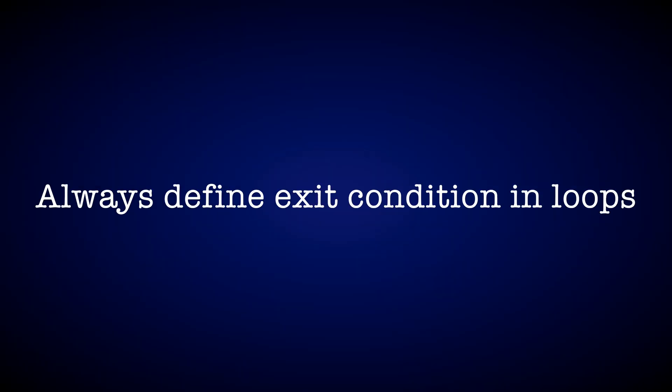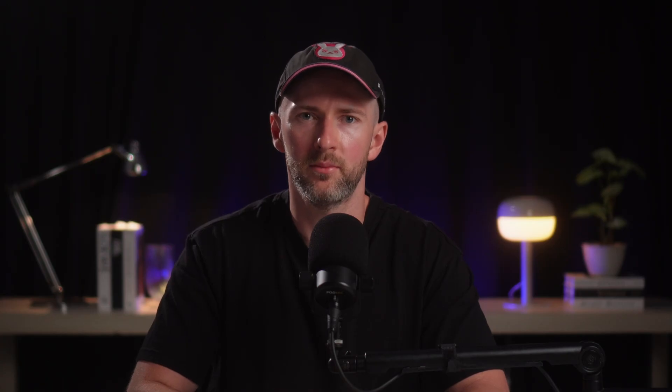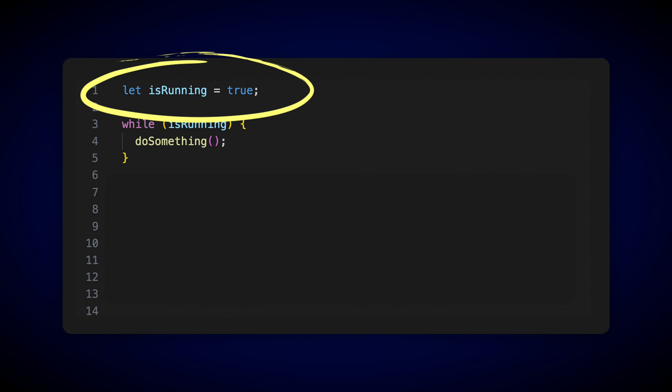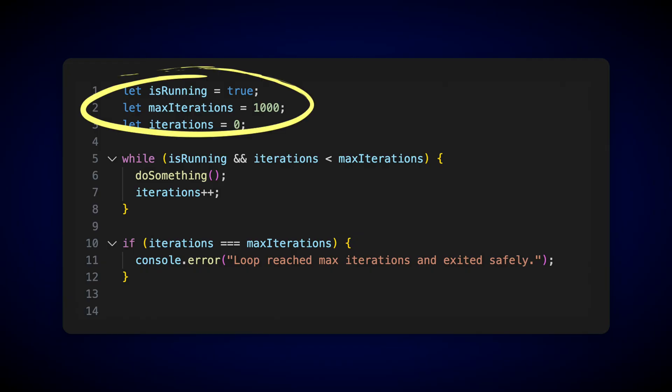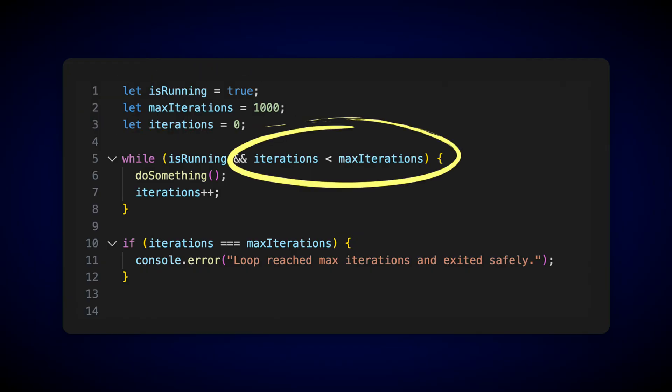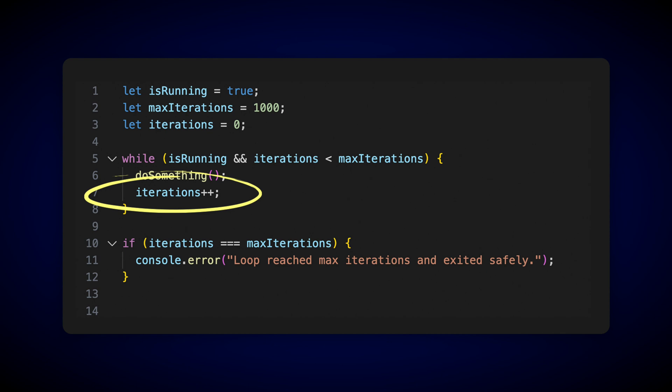They know that even a simple loop can freeze a critical system, and they have a solution for it. They require every loop to have a clear and defined upper boundary — no exceptions. So how do you apply this rule to JavaScript? First, always define a clear exit condition in your loops. If you would work at NASA, you would need to limit the number of iterations by adding a counter. This simple habit will ensure that your loops never spiral out of control, keeping your apps responsive, stable, and reliable.